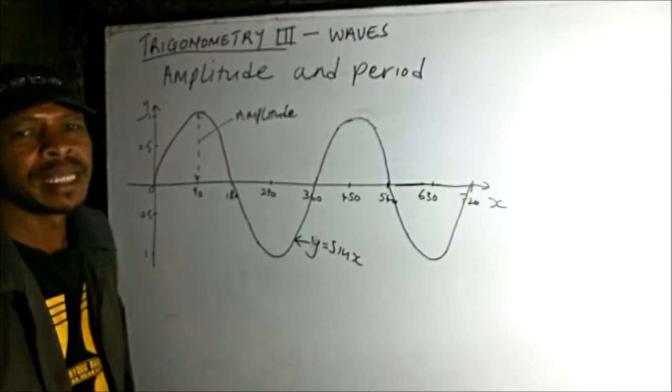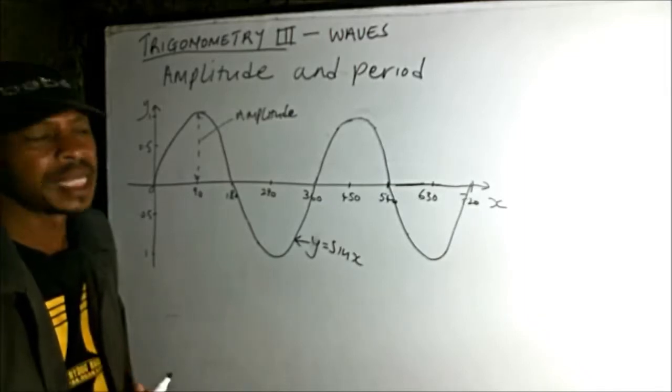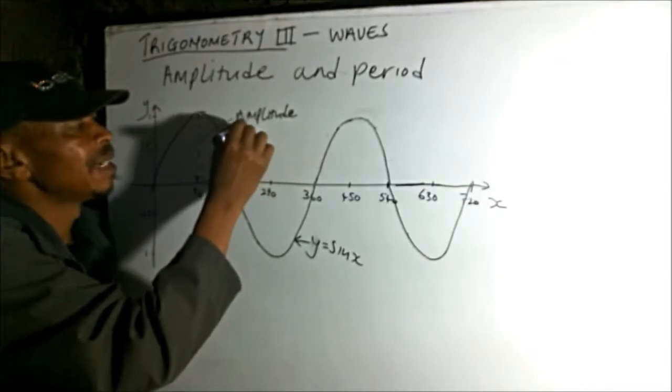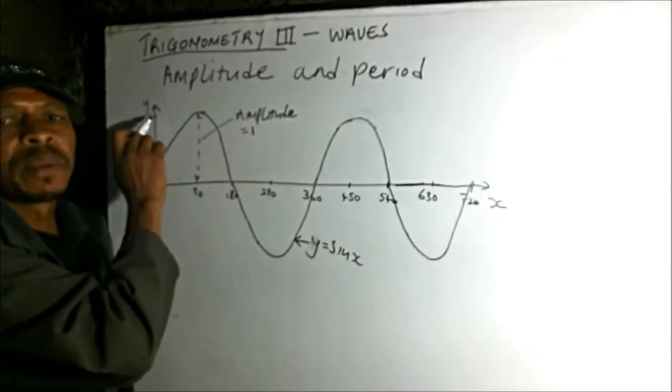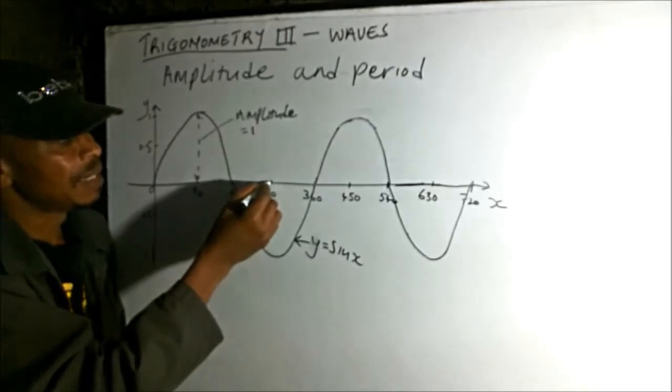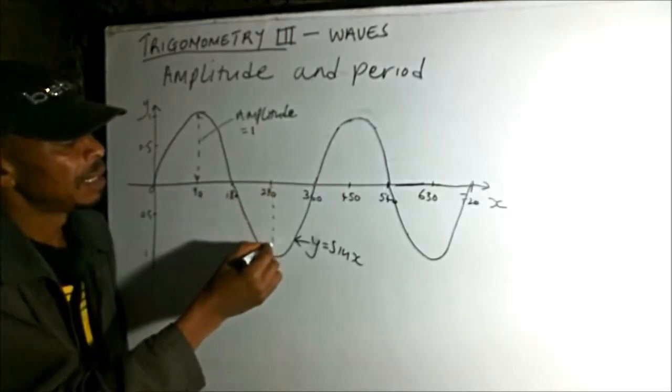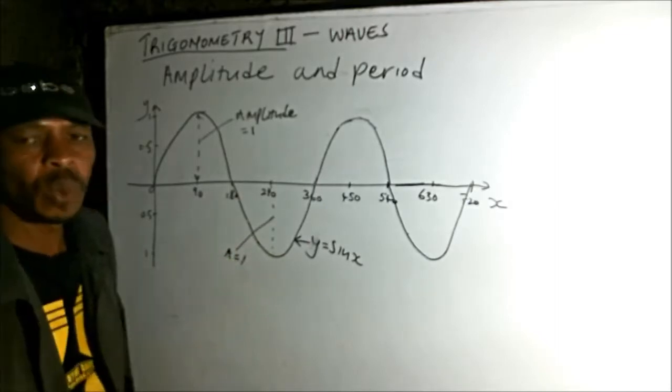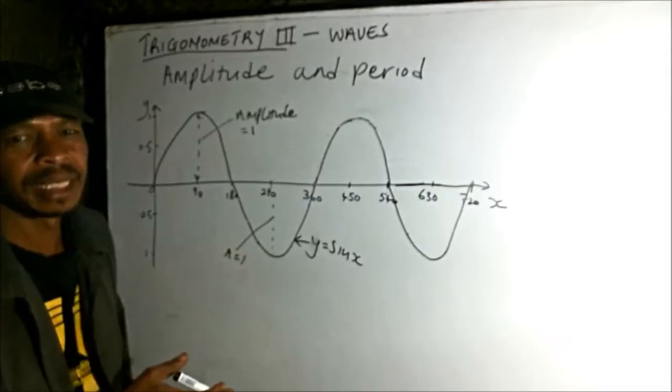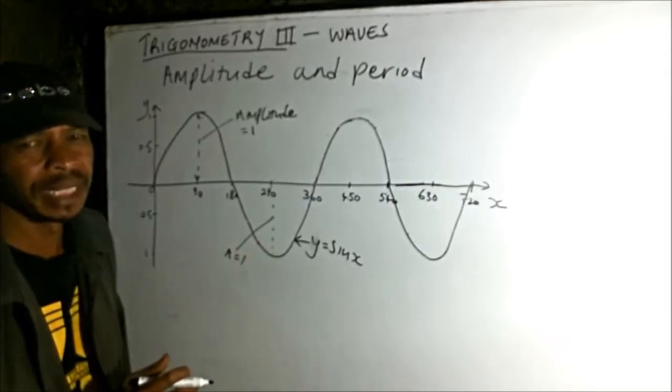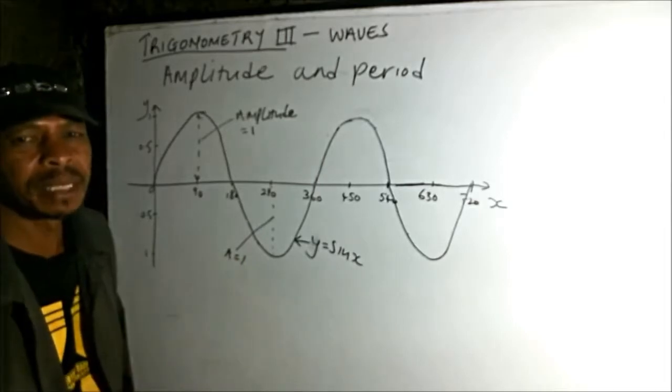Amplitude is the same whether negative or positive. Amplitude here equals 1 because that is where we have the maximum displacement. On the negative side, the amplitude also equals 1. It doesn't matter whether it is the negative side or the positive side - that is the maximum displacement.